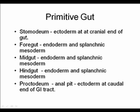The primitive gut has a stomodeum — the oral cavity lined by ectoderm at the cranial end — followed by the foregut with endoderm and splanchnic mesoderm, then the midgut with endoderm and splanchnic mesoderm. The hindgut epithelium is also derived from endoderm, and its connective tissue and muscle come from splanchnic mesoderm. At the caudal end is the proctodeum, also called the anal pit, where we see the transition from endoderm to ectoderm.